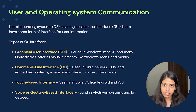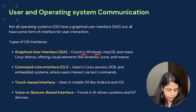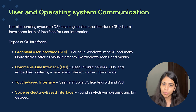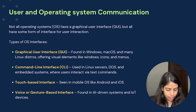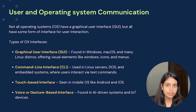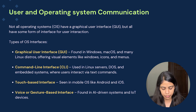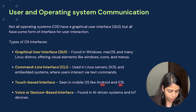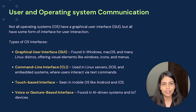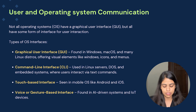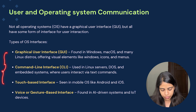Types of OS interfaces: First, graphical user interface (GUI), found mostly in Windows, macOS, and many Linux distros, offering visual elements like windows, icons, menus, and buttons. Second, command line interface (CLI), used in Linux servers, DOS, and embedded systems where users interact via text commands through a terminal or bash shell. Third, touch-based interface, seen in mobile OS like Android and iOS. Fourth, voice or gesture-based interface, found in AI-driven systems and IoT devices. Mostly not all OS have a GUI, but they do have an interface for communication.